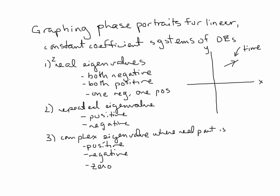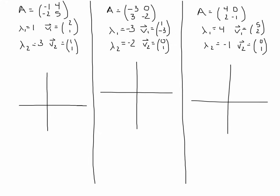Let's do the real eigenvalues first. Here are three different matrices associated with a system of differential equations, with their eigenvalues and eigenvectors. All we need are the eigenvalues and eigenvectors to graph each one. The first matrix has both positive eigenvalues, the second has both negative eigenvalues, and the third has one positive and one negative.